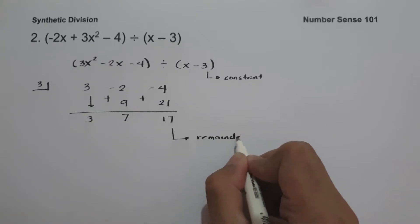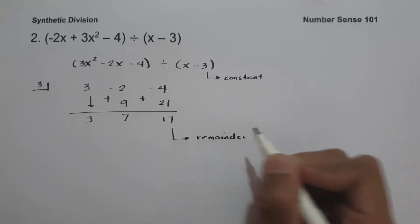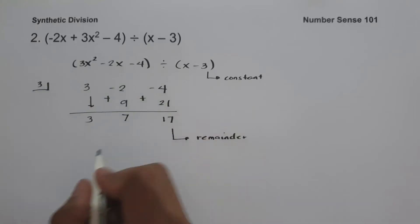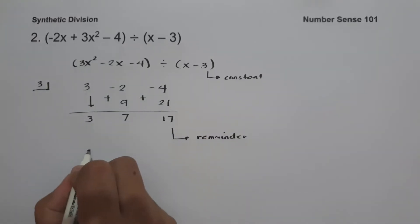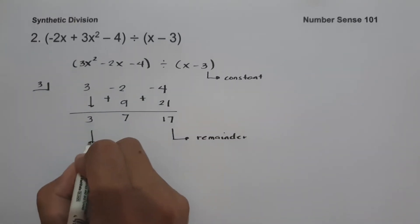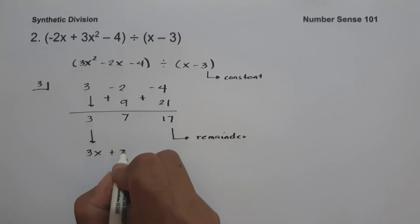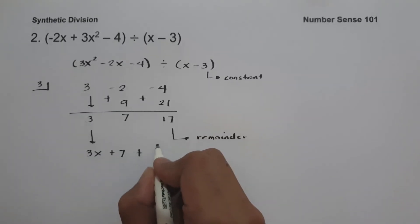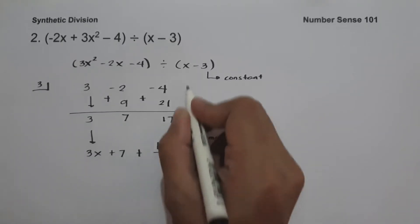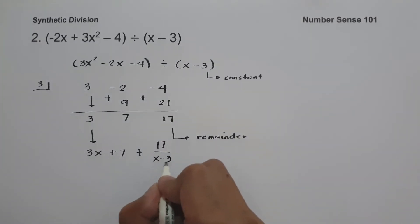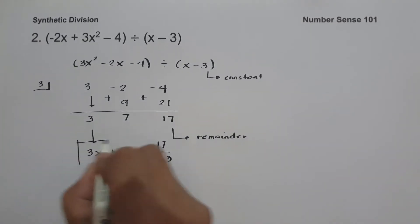we write our answer as 3x squared divided by x, which is 3x. Then 7 as our constant, plus our remainder 17, divided by our divisor x minus 3. And this is our answer.